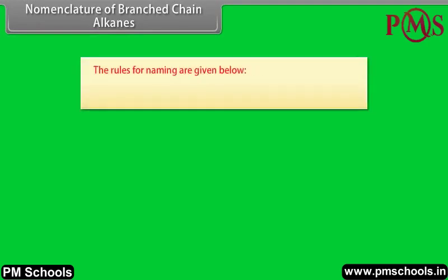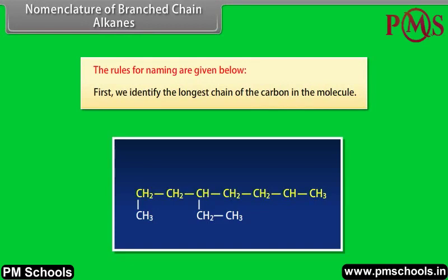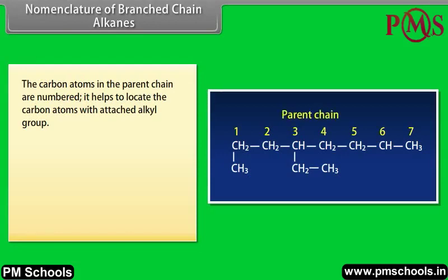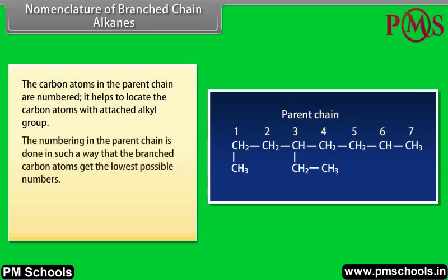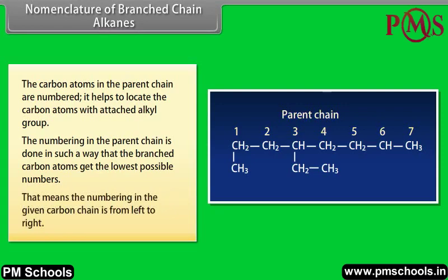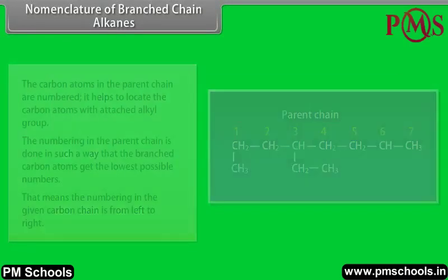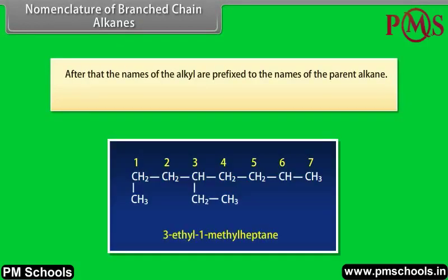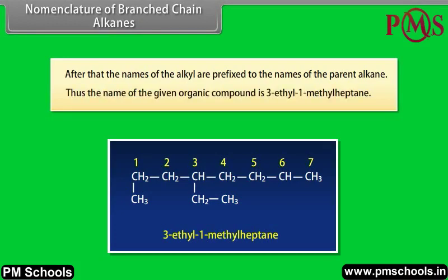Nomenclature of branched chain alkanes. The rules for naming are: first, identify the longest chain of carbons in the molecule. The carbon atoms in the parent chain are numbered to locate the carbons with attached alkyl groups. The numbering is done so that the branched carbon atoms get the lowest possible numbers, meaning the numbering goes from left to right. The names of the alkyl groups are prefixed to the name of the parent alkane. For example, the name of the given compound is 3-ethyl-1-methyl-heptane.